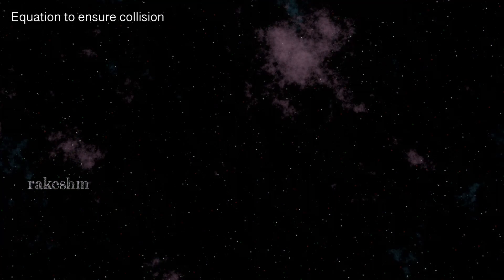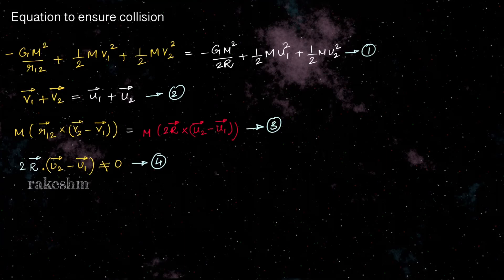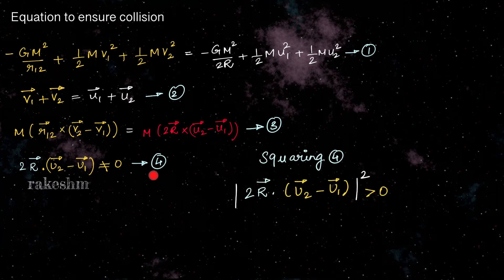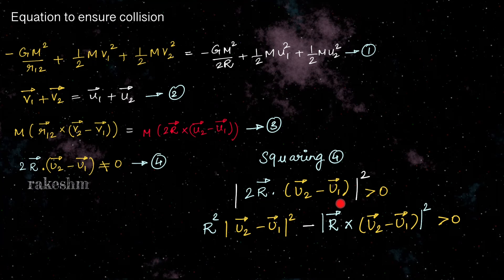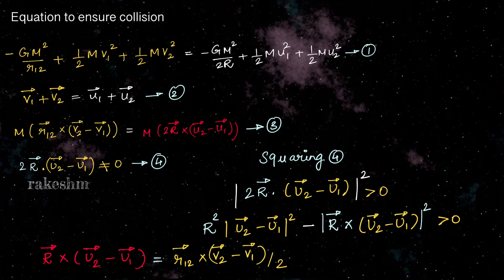As both planets have collided, let us solve our equations and derive an expression to ensure collision. I am numbering my equations 1, 2, 3, and 4. First I am squaring expression 4. Squaring expression 4, we get this term is greater than 0. So (a dot b) squared equals a squared times b squared minus (a cross b) squared, and this expression must be greater than 0. Now let us find these two expressions in terms of known variables. This one is from equation 3, so we can write r bar cross (u2 bar minus u1 bar) equals r12 bar cross (v2 bar minus v1 bar) by 2.